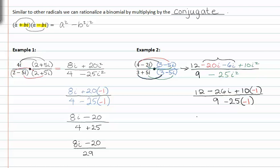Simplifying further we get twelve minus twenty six i minus ten all over nine plus twenty five. In the numerator twelve and negative ten are like terms and in the denominator nine and twenty five are also like terms. Which means we can simplify things further.